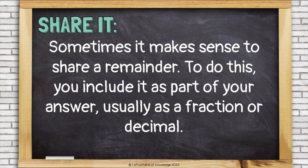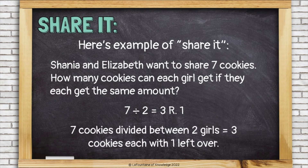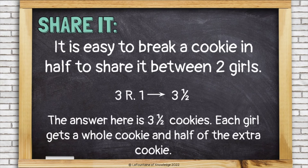Share it is our third option. Sometimes it makes sense to share a remainder. To do this, you include it as part of your answer, usually as a fraction or a decimal. Shania and Elizabeth want to share 7 cookies. How many cookies can each girl get if they each get the same amount? So we're dividing 7 divided by 2, which is 3 remainder 1. If we divide 7 cookies between 2 girls, they will each get 3 cookies and there will be 1 left over. It's easy to break a cookie in half to share it between 2 girls. The answer here is 3 and a half cookies — each girl gets 3 whole cookies and half of the extra cookie.